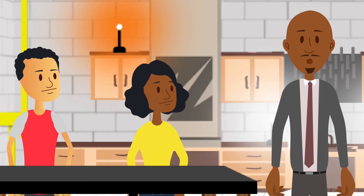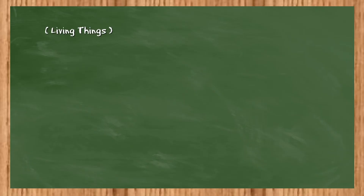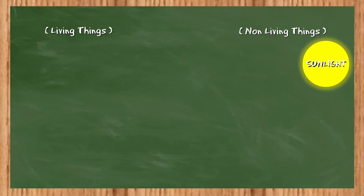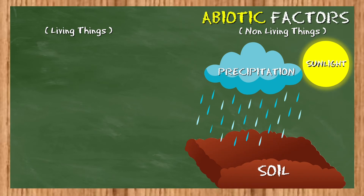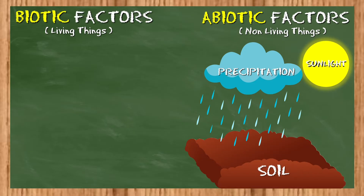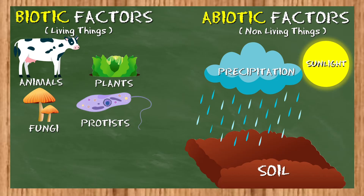The entire world only contains two things. That doesn't sound right — two things, really? Yes: living and non-living things. Non-living things like sunlight, soil, and precipitation — we call those abiotic factors. And they all affect biotic factors, or living things, like animals, plants, fungi, and bacteria.